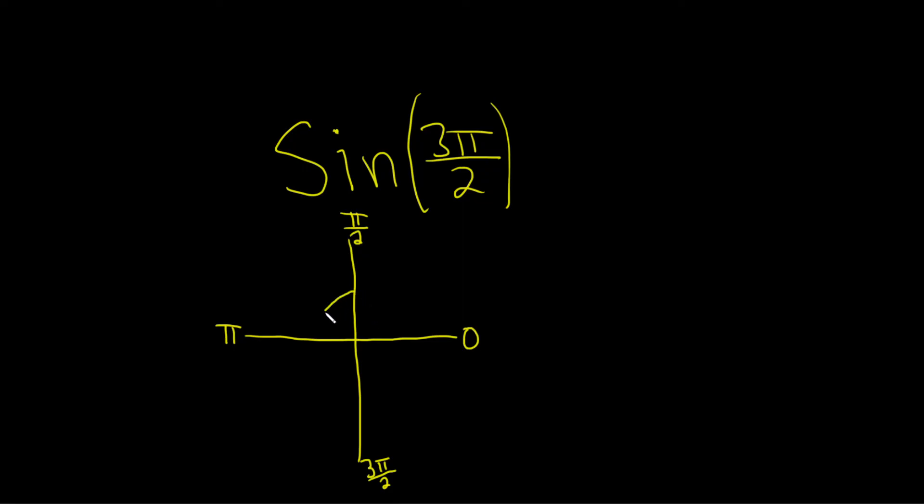Alright so let's go ahead and draw our unit circle. On the unit circle every ordered pair has the form cosine theta, comma, sine theta.